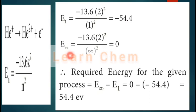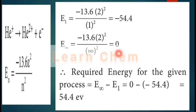When the electron is completely removed, it is at infinite distance, so E∞ = −13.6 × 4/∞ = 0. The energy required is E∞ − E₁ = 0 − (−54.4) = +54.4 eV.